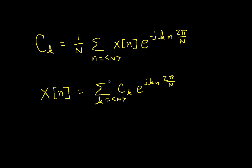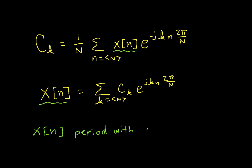For the discrete time Fourier series, the idea is that we have a signal x of n, which shows up right here and right here. x of n is periodic with period N. From x of n, we'll compute a set of Fourier series coefficients, which are the c sub k's. There will actually be N distinct Fourier series coefficients. It turns out that the Fourier series coefficients are periodic as well, with period N.